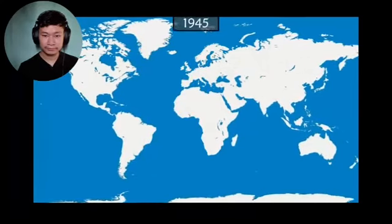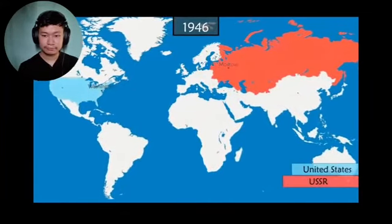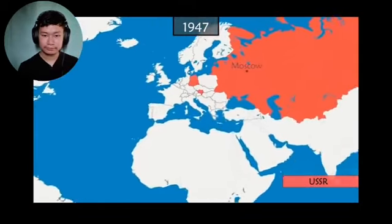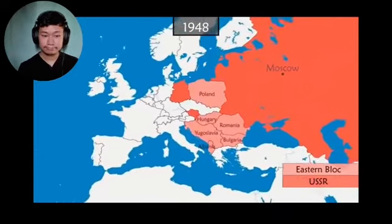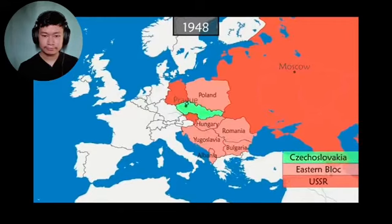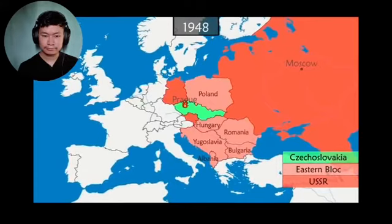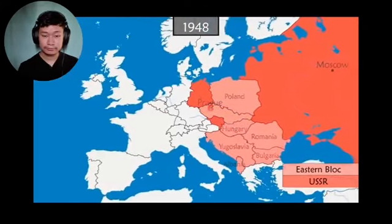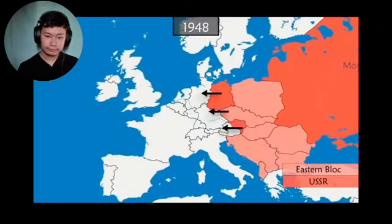We begin at the end of World War II. Among the victors, the USSR and the United States are now the two world superpowers. Europe is devastated. The east of the old continent is under the influence of the Soviet Union. In February 1948, Czechoslovakia, which is a parliamentary democracy, suffers a coup d'état orchestrated by the Communist Party and supported by the Soviet camp. In Western Europe, this event leads to fears that Soviet influence will spread further westward.